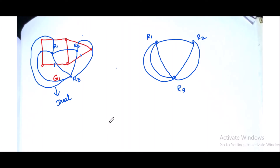Now we will see the dual graph. Let us consider this to be G star. This graph is dual. We will see that the graph is planar. The edges do not cross at any angle — that is, the edges are intersecting only at the vertices. So the graph is planar.